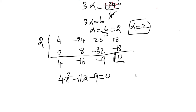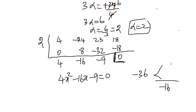Now solve 4x² - 16x - 9 = 0 by the factor method. First coefficient is 4, constant is -9, so 4 times -9 is -36. We need two numbers that multiply to -36 and add to -16. Those numbers are -18 and +2, since -18 plus 2 equals -16 and -18 times 2 equals -36.